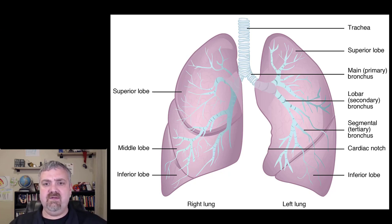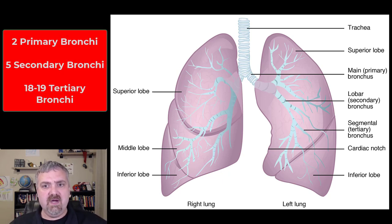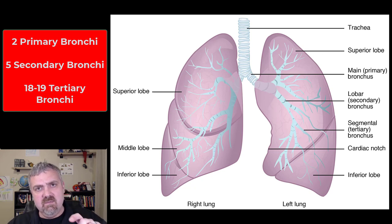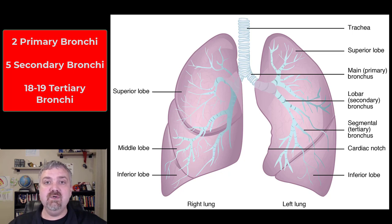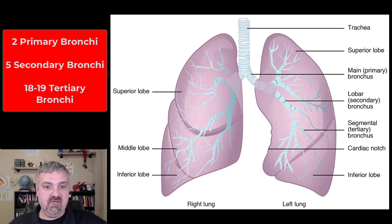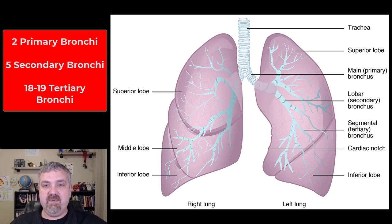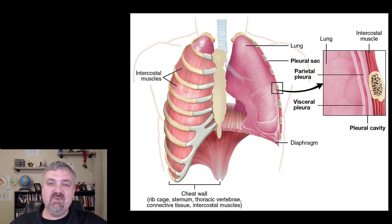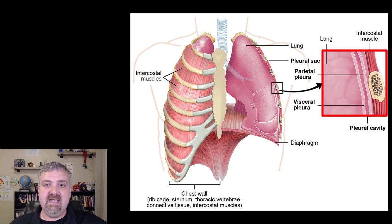Remember that you can see the bronchial tree inside of here as well. You have the left and right primary bronchus, which are what actually enter the lungs. The right bronchus is going to be a little more horizontal and wider because it has to feed three lobes instead of two. Then you're going to have the five secondary bronchi — one for each lobe — and then 18 or 19 tertiary bronchi, one for each bronchopulmonary segment, and then branching continues. This is a really cool image that shows the pleural cavity that the lung is actually in.